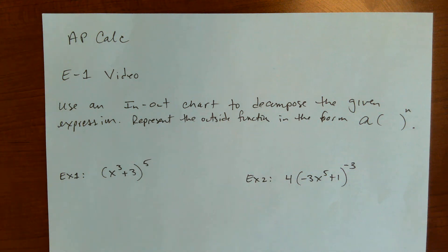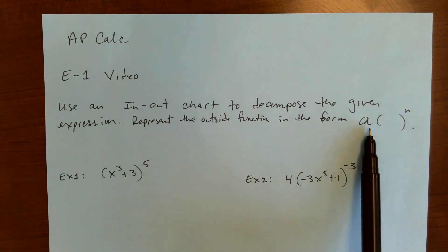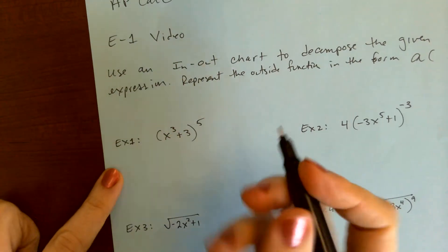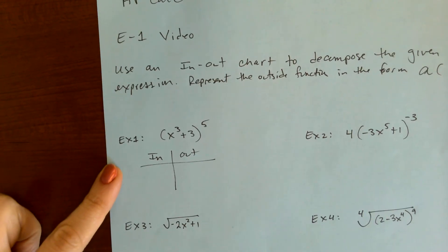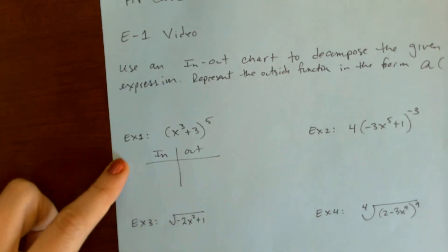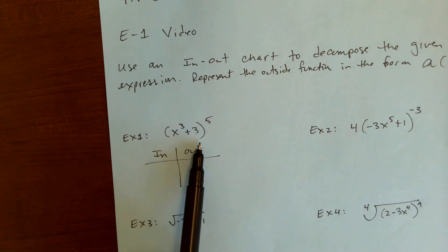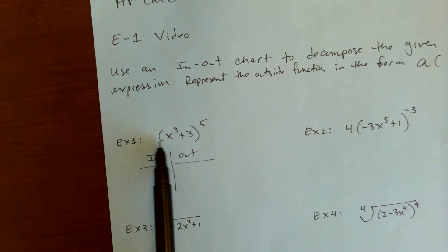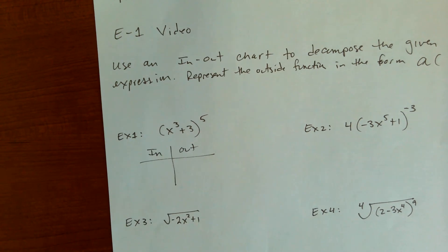Now, to use the chain rule, at a certain point in that process, you're going to want to use the power rule. That's why this A-blank to the N is important. We're basically identifying for ourselves later for the chain rule: this expression here can be looked at as a composition of two other functions. We're looking for the inside function and the outside function.